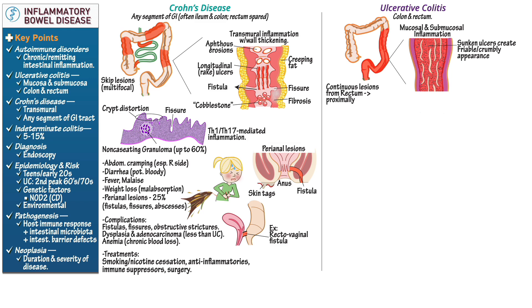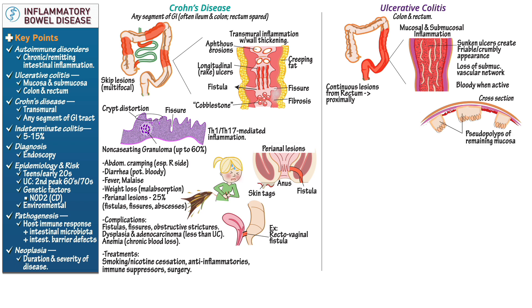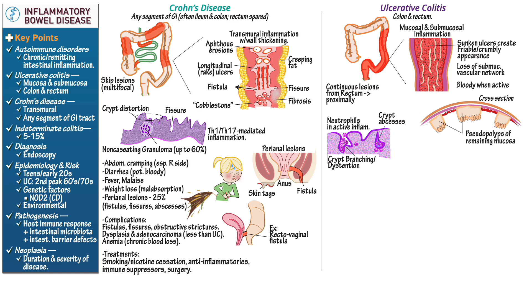Indicate that inflammation creates sunken, red, bloody ulcers with a friable or crumbly appearance. The remaining tissue of the GI tract appears as light beige patches rising above the sunken ulcers. Inflammation destroys the submucosal vascular network, and the mucosa is bloody when inflammation is active. Redraw the GI tract in cross-section to show the sunken ulcerous tissue with the remaining mucosa creating pseudopolyps. Show that histologically, ulcerative colitis is characterized by branching and distension of the intestinal crypts with neutrophils present during active inflammation, and show crypt abscesses with neutrophils. Indicate that ulcerative colitis inflammation is Th2 cell-mediated.